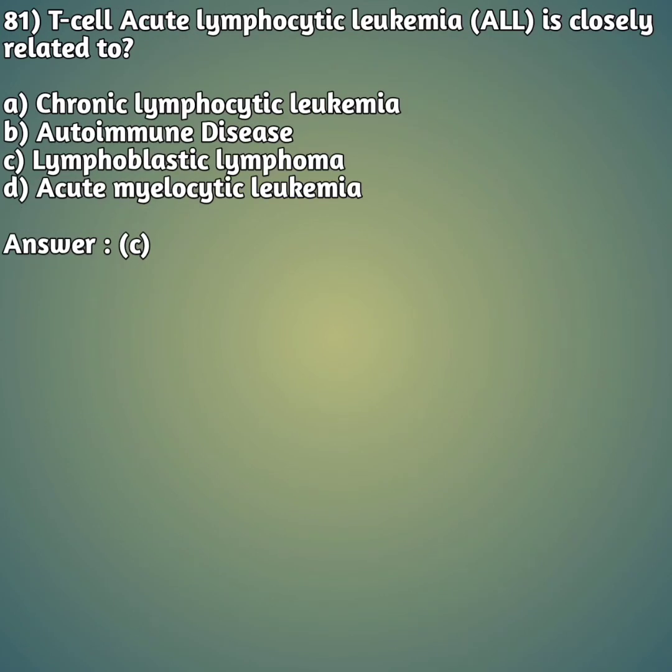Moving on to our 81st question: T-cell acute lymphocytic leukemia (ALL) is closely related to - option A: chronic lymphocytic leukemia (CLL). Option B: autoimmune disease. Option C: lymphoblastic lymphoma. Option D: acute myelocytic leukemia. The right answer is answer C - lymphoblastic lymphoma.